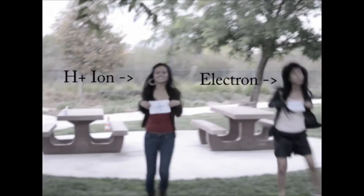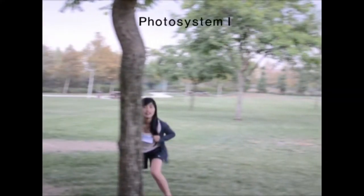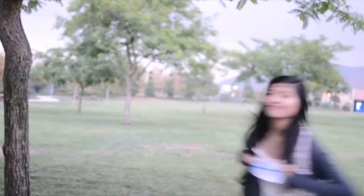As this happens, Alexis, representing hydrogen ions, moves into the thylakoid membrane by the proton gradient. Jackie finally moves to photosystem 1. Another electron then comes out of photosystem 1. This process happens over and over in the cell.